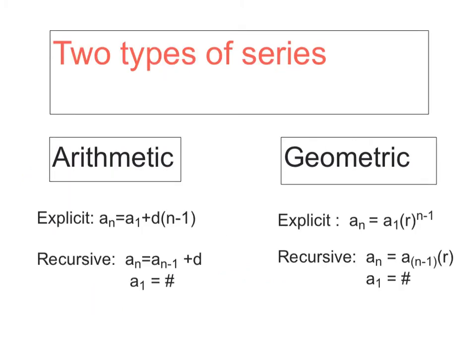There are two types of series that we're familiar with. Arithmetic was the one we covered in our previous lesson, and tonight we're going to hit geometric. These are things we have to have memorized — this is a great time for flashcards. These are things from Algebra 1 that we reviewed last week. We have an explicit formula for arithmetic and an explicit formula for geometric.